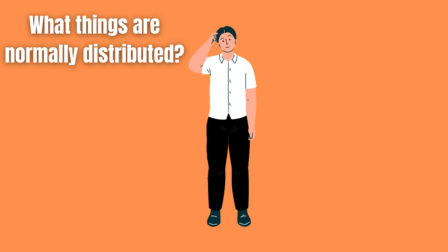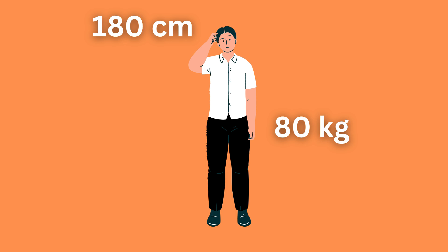Many things follow this normal distribution in nature, such as height and weight in humans.